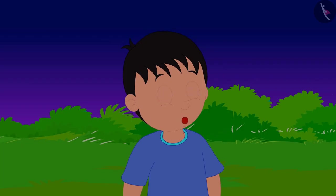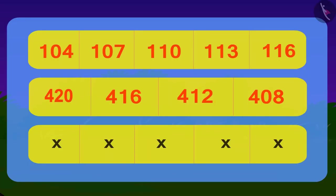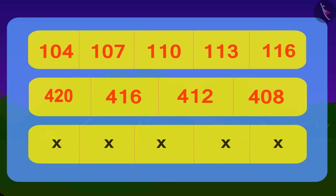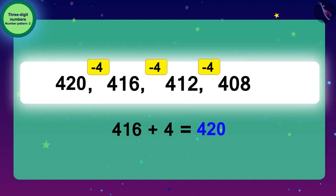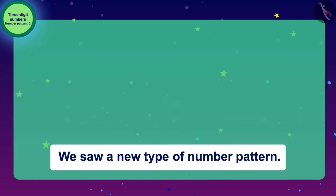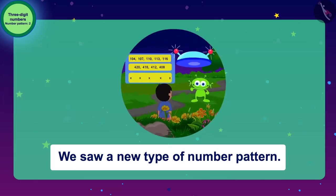Raju told the answer of the code to the alien, and the alien showed his third and last code. Children, today we saw a new type of number pattern. In the next video, we will try our best to save Bablu from the alien using our knowledge in number patterns.